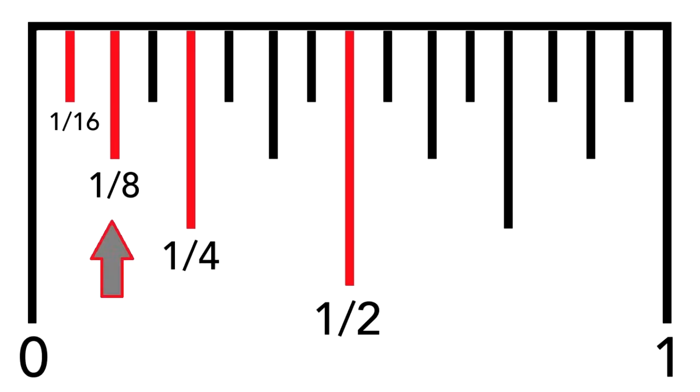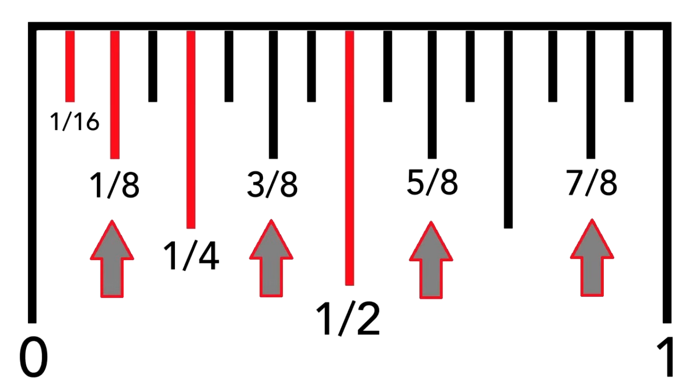So, this is 1 eighth. That makes this 3 eighths. This is 5 eighths. And this is 7 eighths. 1, 3, 5, 7.